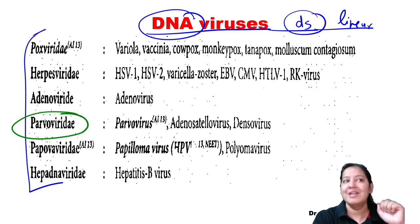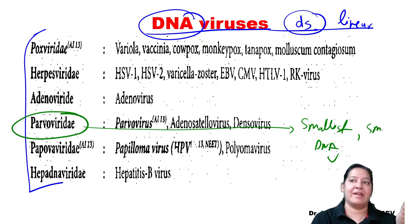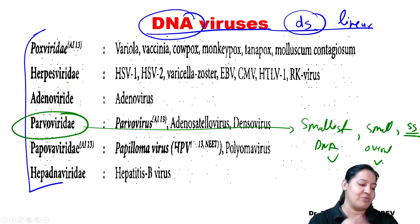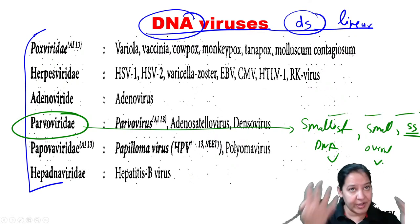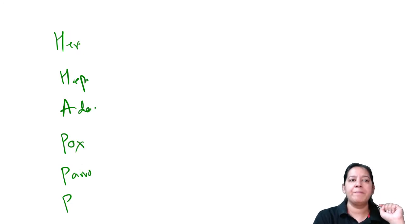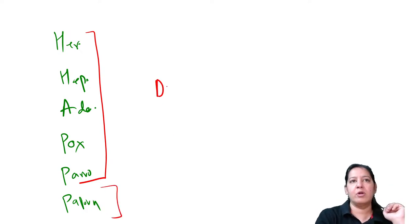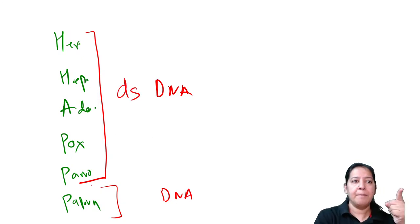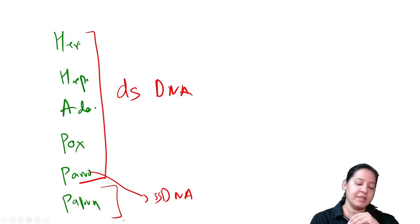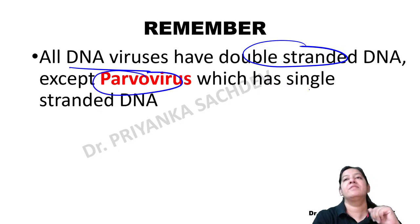The exception is Parvo, which is the smallest. Two important things about Parvo: it is the smallest DNA virus and also the smallest overall virus, and it has single-stranded DNA - not double-stranded. It is a DNA virus but it is single-stranded DNA. So all DNA viruses have double-stranded DNA except Parvo virus, which has single-stranded DNA. Remaining five are double-stranded. Parvo is the smallest; Pox is the largest.